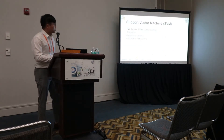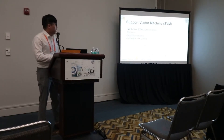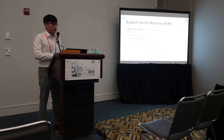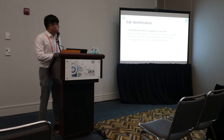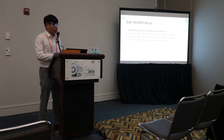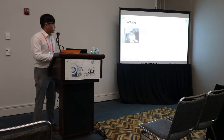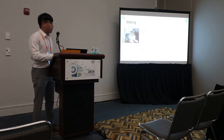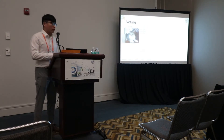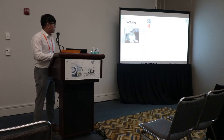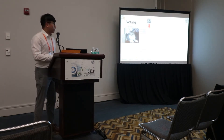The next step is identification. I identify cats using a Support Vector Machine (SVM), and validate the performance using 6-fold cross-validation. There are 238 different cats with 6 images each used for validation. Each facial part has a corresponding SVM, and it gives a score over all 238 cats. For example, the right eye SVM assigns the highest score to cat number 237, so it classifies as cat number 237.